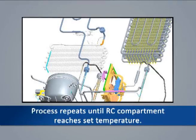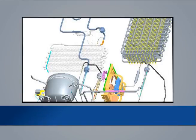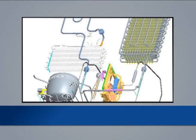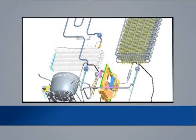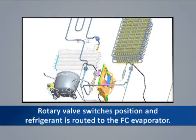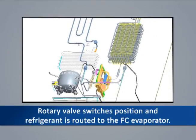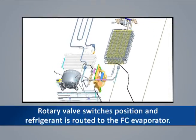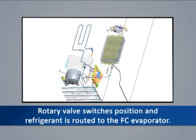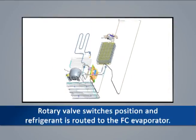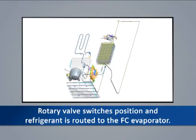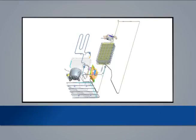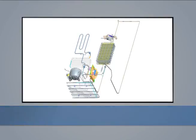When the temperature of the RC compartment reaches the set temperature, the compressor shuts off. When the FC compartment requires cooling, the rotary valve switches position and the refrigerant is routed to the FC cap tube and the FC evaporator until the FC set temperature is reached.